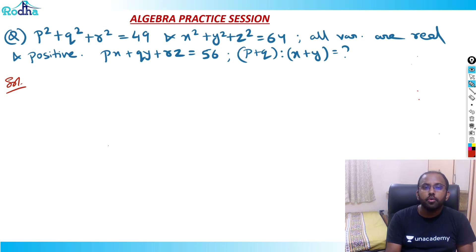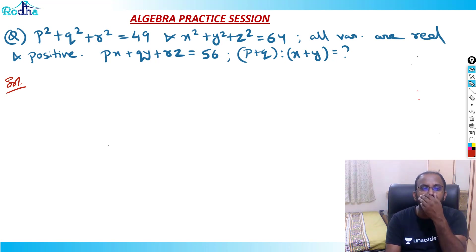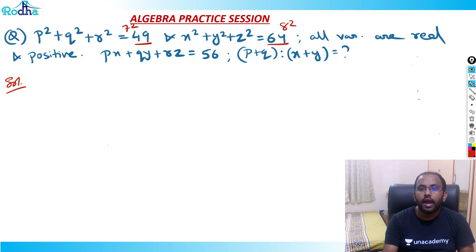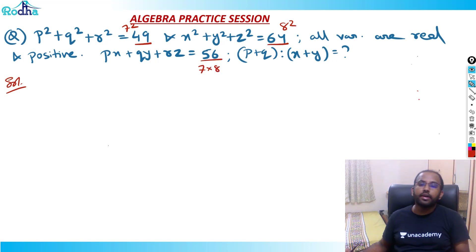Now if you see here, what we observe is 49, which is 7², and 64, which is 8², and 56, which is 7 × 8. This is the kind of pattern to observe in this kind of question.